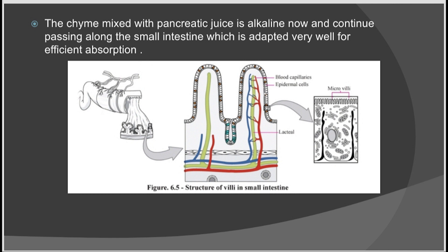The chyme then passes along the rest of the small intestine, which is specially adapted to increase the efficiency of food absorption. These adaptations include being a long tube, the presence of circular folds in the inner wall, the presence of finger-like projections called villi in the circular folds, the presence of microvilli on the epithelial cells of the villi, and the highly vascularized epithelial lining on the villi with blood capillaries.